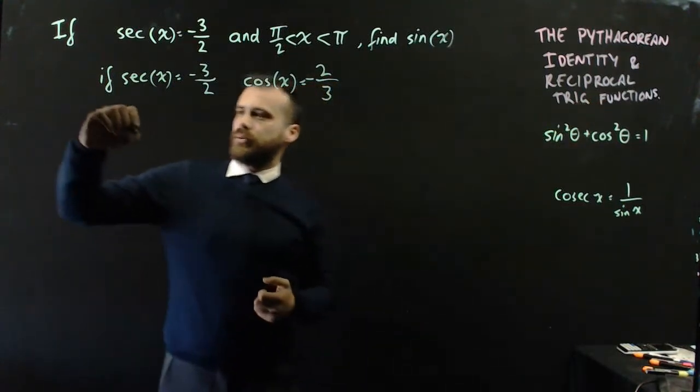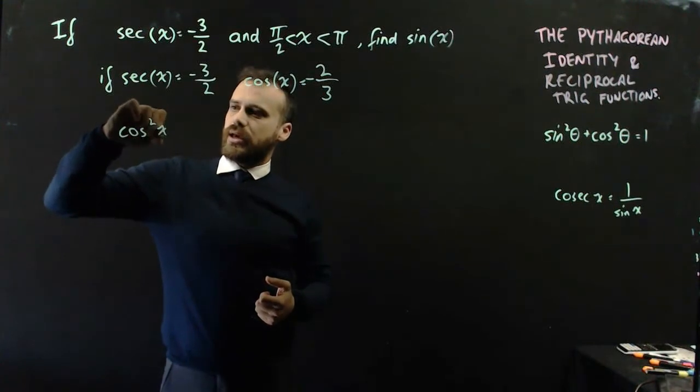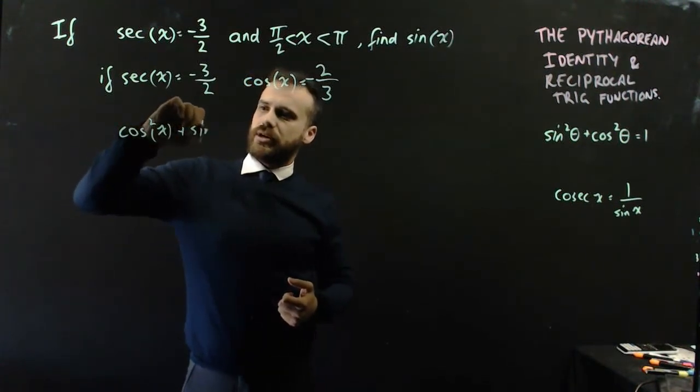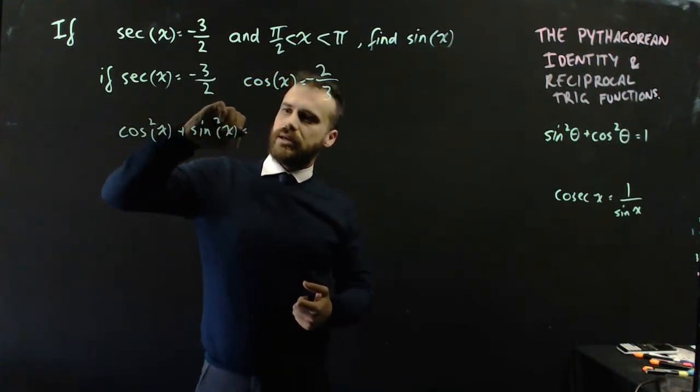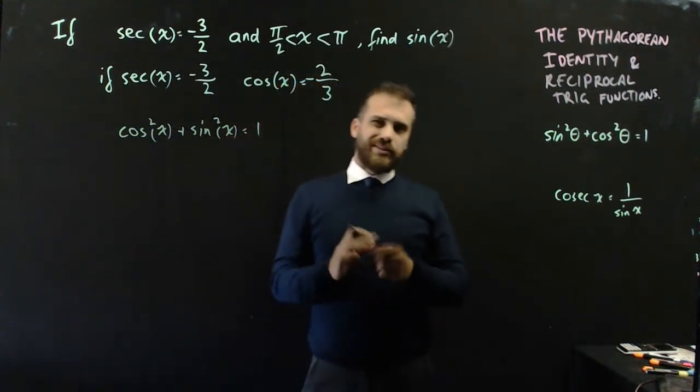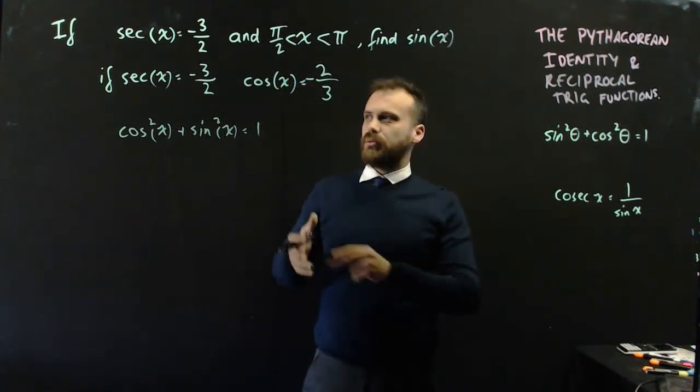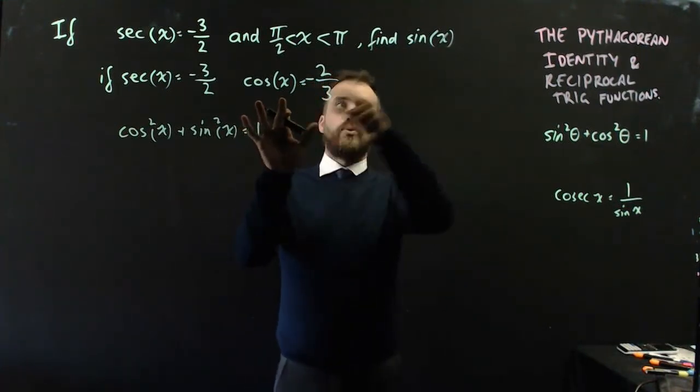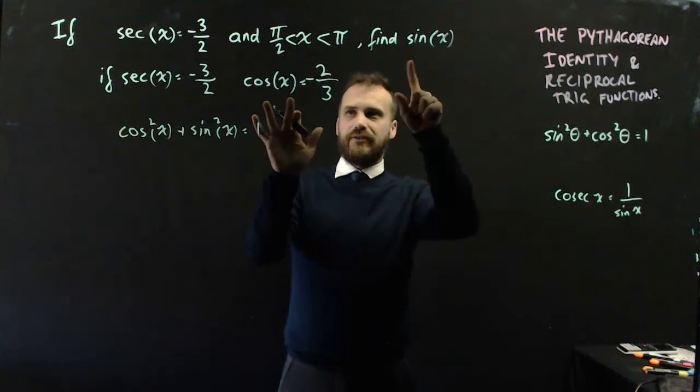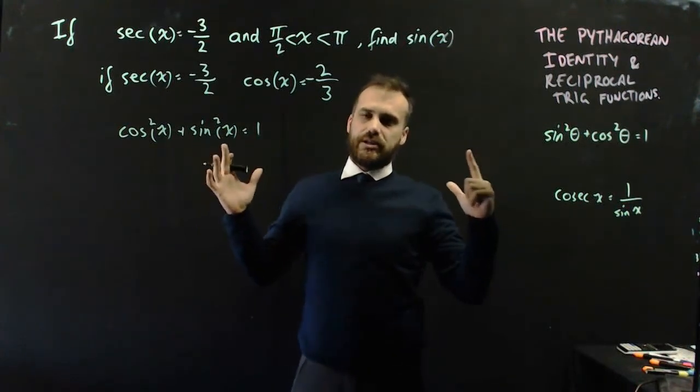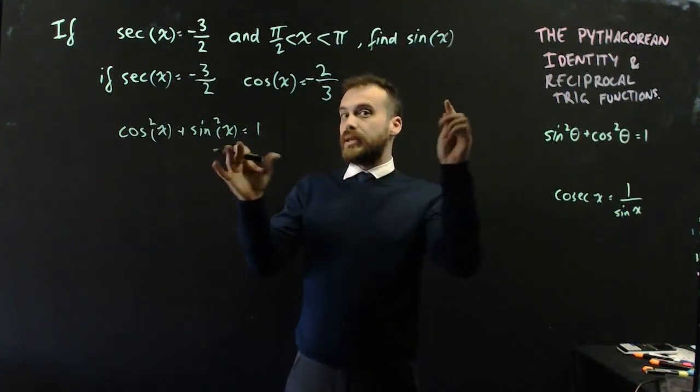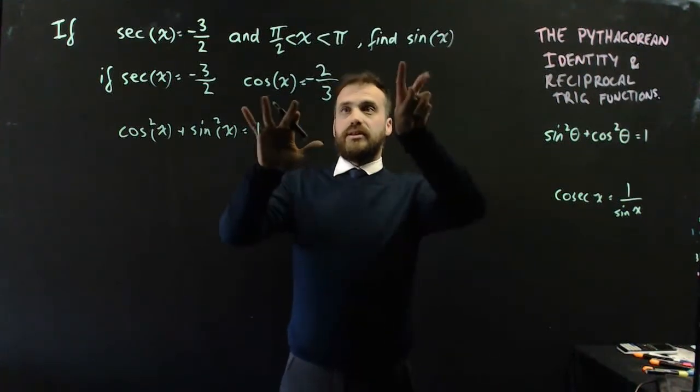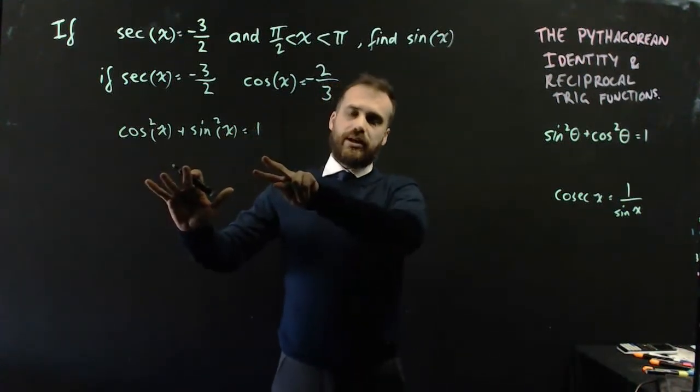Pythagoras' theorem, we know that cos squared x plus sine squared x equals 1. I'll probably pause here for a minute, and you'd probably think, well, how come he's just jumping to the Pythagorean theorem? Well, I know cos x, I want to know sine x. If that's the case, the Pythagorean identity, because those two link each other, then this is a good way to think about it.